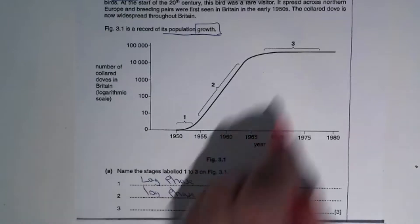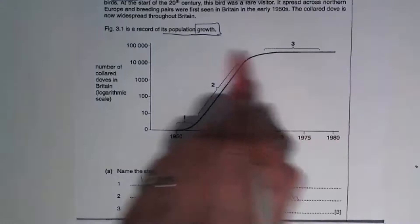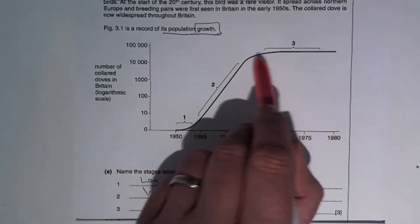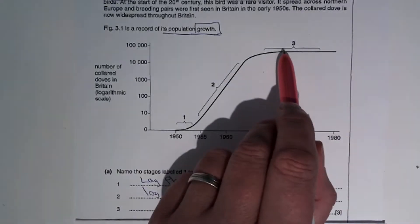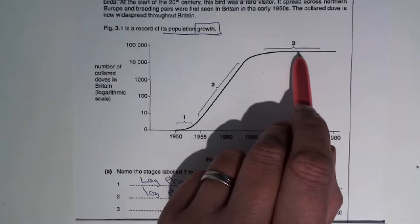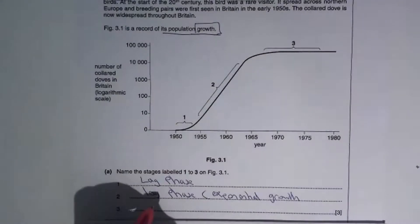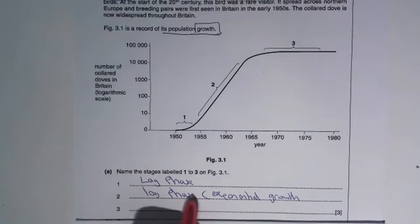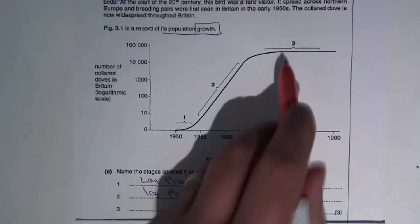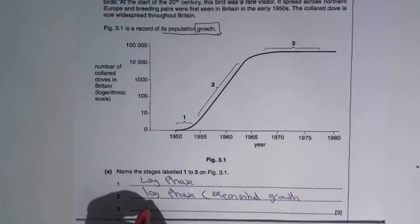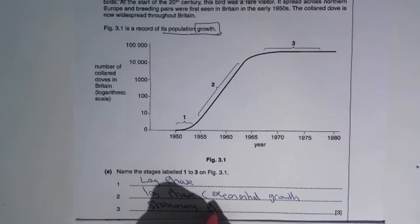And then the final phase, number three, we can see the population now is starting to level off and stays constant. Constantly plateaus. And this is where birth rate is equal to death rate. At log phase, birth rate massively exceeds death rate. So at three birth rate is equal to death rate. And we call that the stationary phase.